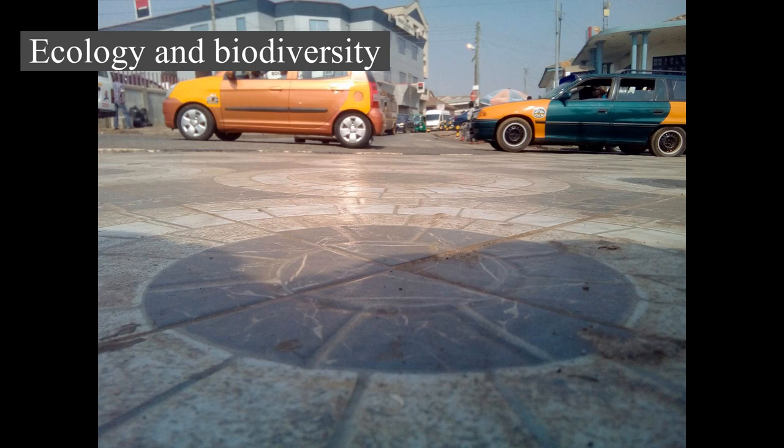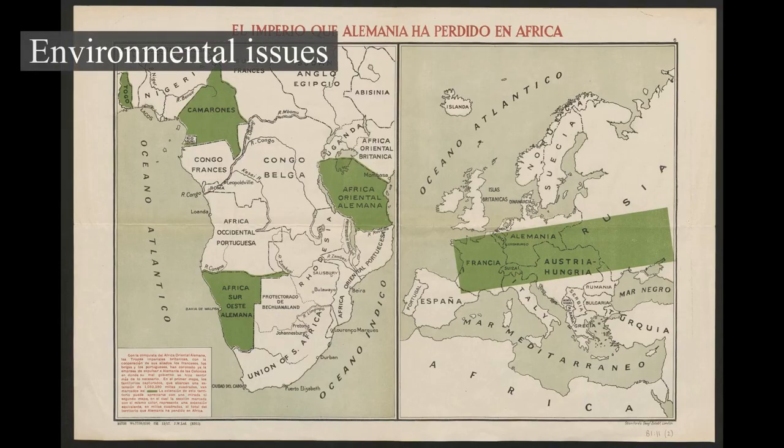Some sources claim that approximately 90% of the original virgin forests in West Africa have been destroyed, and over 90% of Madagascar's original forests have been destroyed since the arrival of humans 2,000 years ago. About 65% of Africa's agricultural land suffers from soil degradation.